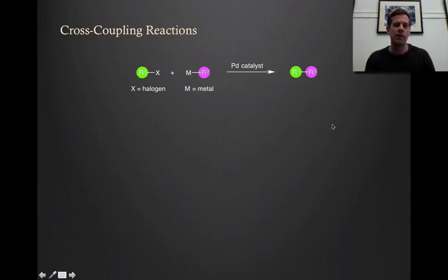In this final video for aromatic chemistry, we're going to talk about a class of reactions known as cross-coupling reactions. What these entail is basically the idea that you're going to take one component that has a halogen substituent, so it looks like an electrophile, and react that with another substrate that has a metal on it, so it looks like a nucleophile.